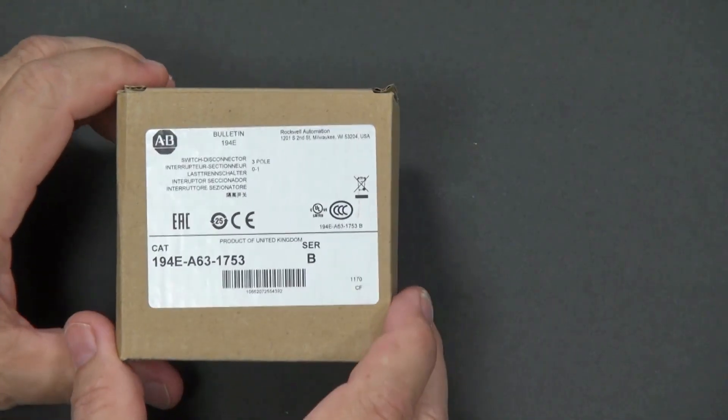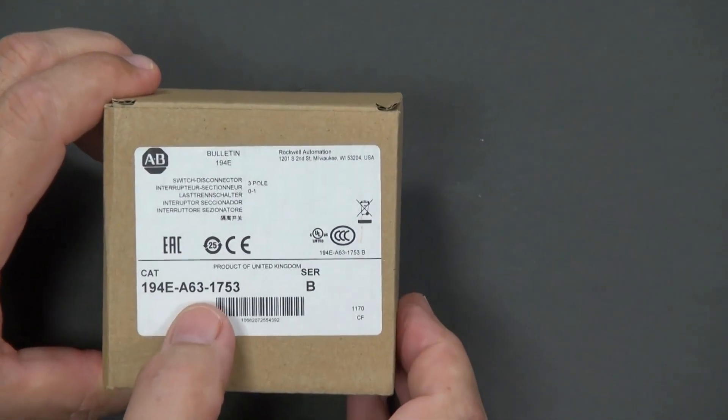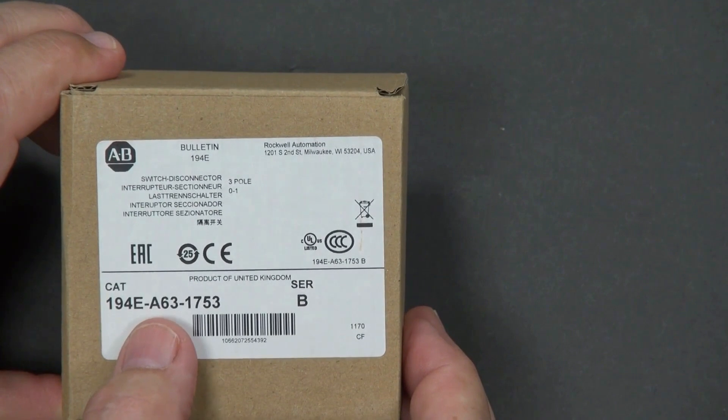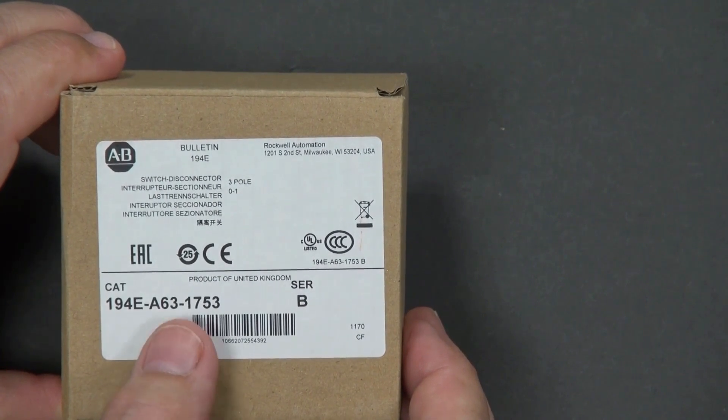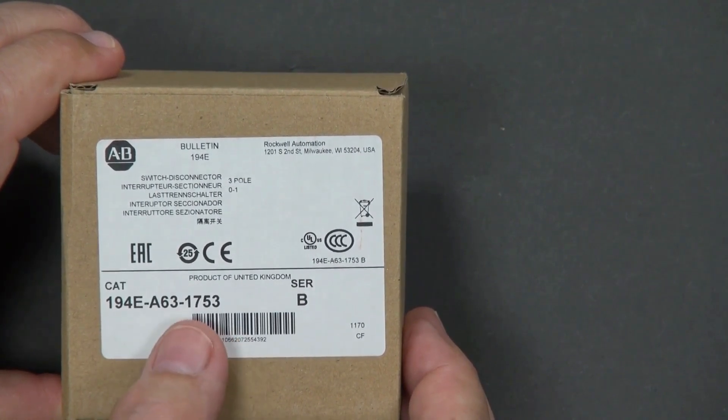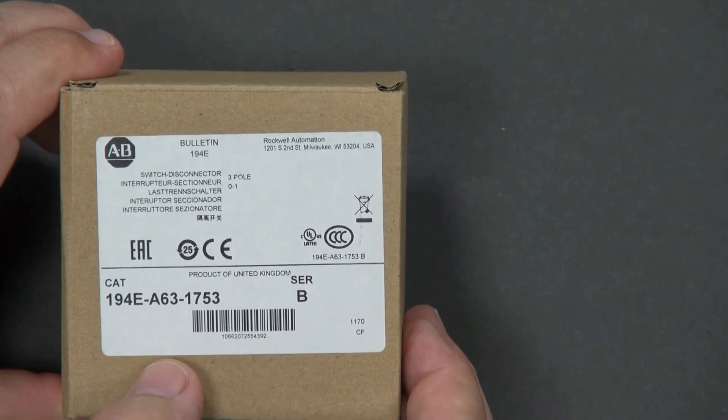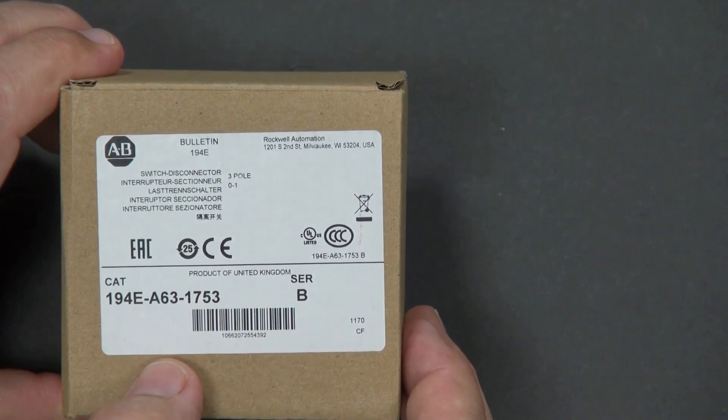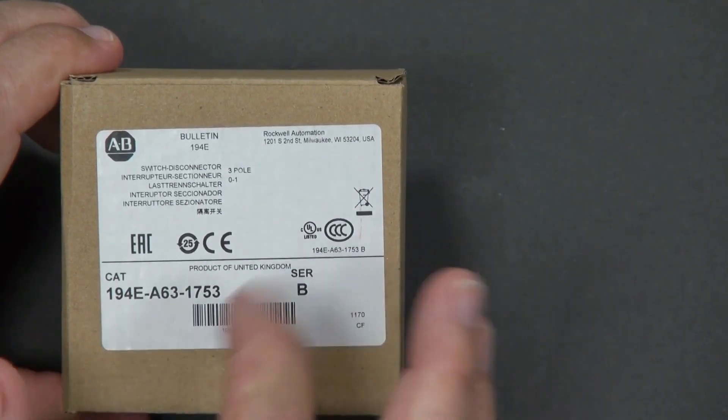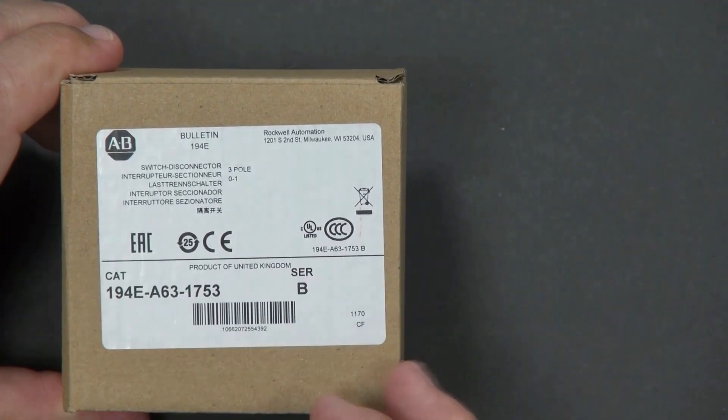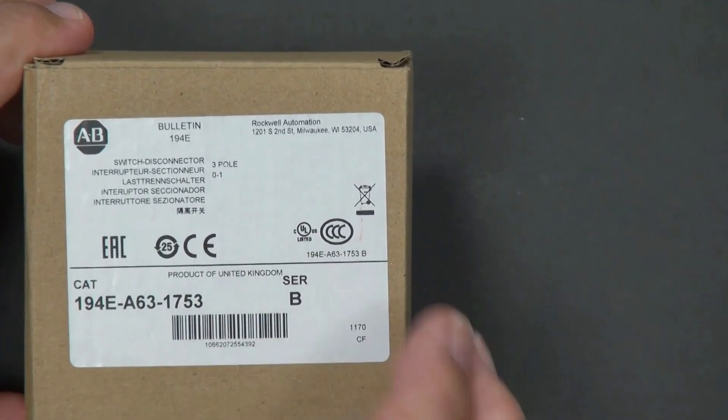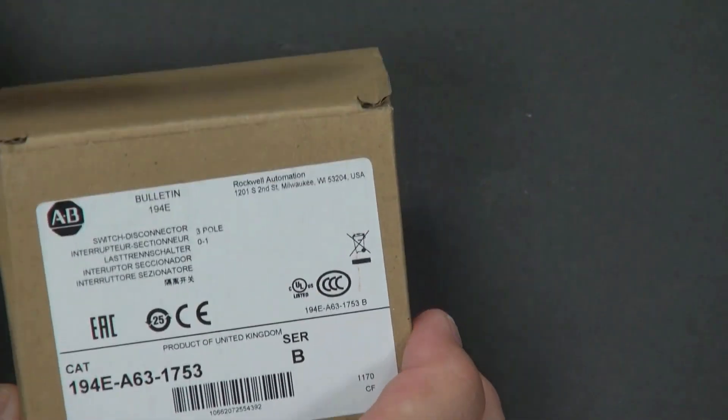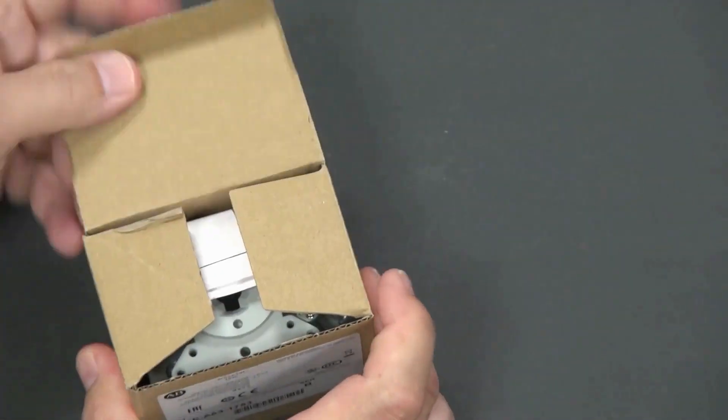Finally, let's review the 194E load switch out of the box. The aid here designates that this is a base mount switch, 63 ampere rating. 1753 indicates that it's a three pole switch. Here, the label of the relevant certifications for the product with the product description and translations.